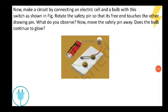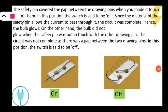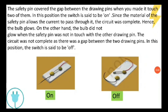When the safety pin is not connected to the second drawing pin, the circuit is not complete and the bulb will not glow. When you rotate the safety pin to touch the second drawing pin, you complete the circuit — this is the switch-on condition and the bulb glows. When you disconnect it, this is the switch-off condition, meaning the circuit is not complete and electricity cannot flow, so the bulb will not glow.